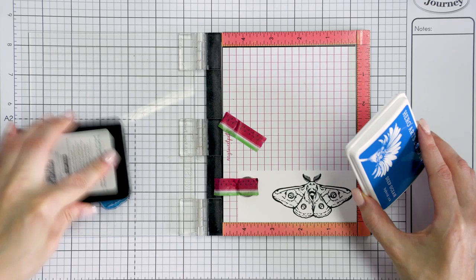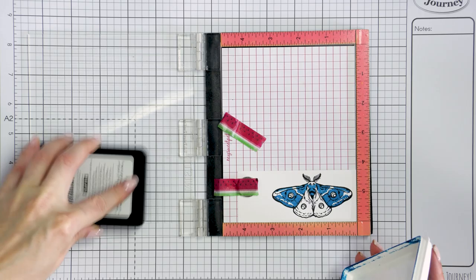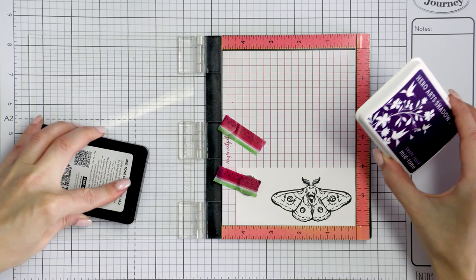You don't have to stamp it in black if you don't like black. It can be grey, brown or any other dark enough color so that you would be able to see it through the layers placed over it.